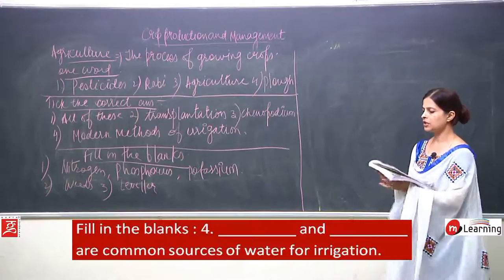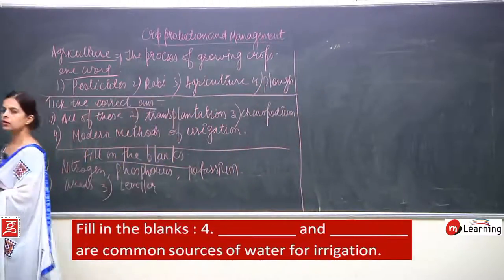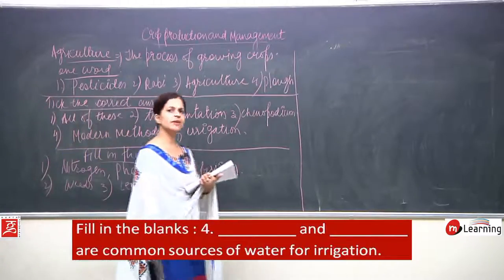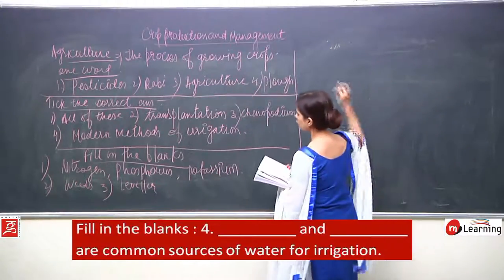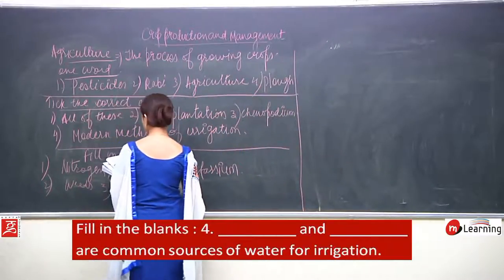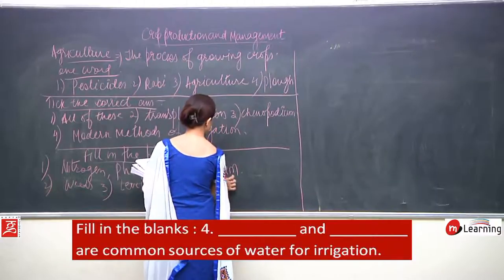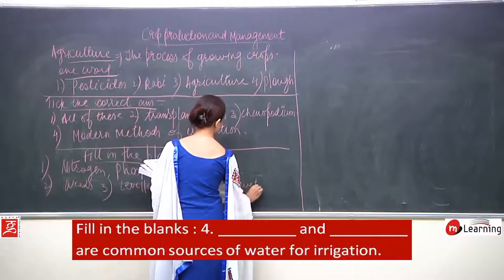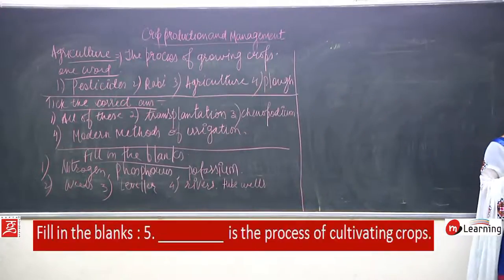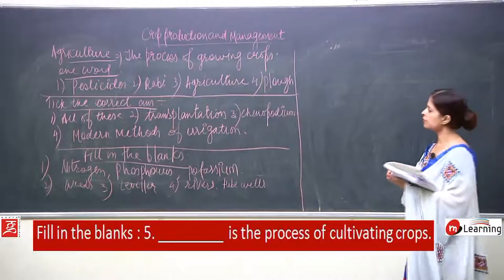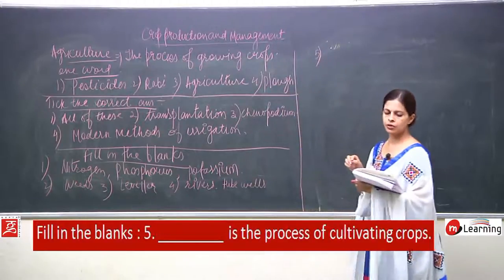Number 4: dash and dash are common sources of water for irrigation. You can write wells and rivers — these are very common means of irrigation. Number 5: agriculture is the process of cultivating crops.